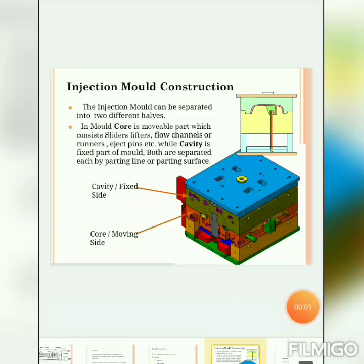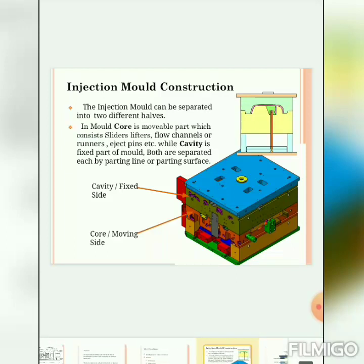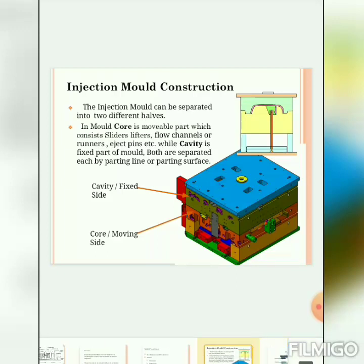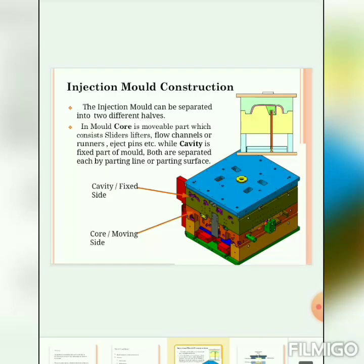In injection mold construction, the mold can be separated into two different halves. The core is the movable part, which consists of a slider, lifter, flow channel, runners, and eject pins. The cavity is the fixed part of the mold. Both are separated from each other by the part line or parting surfaces.